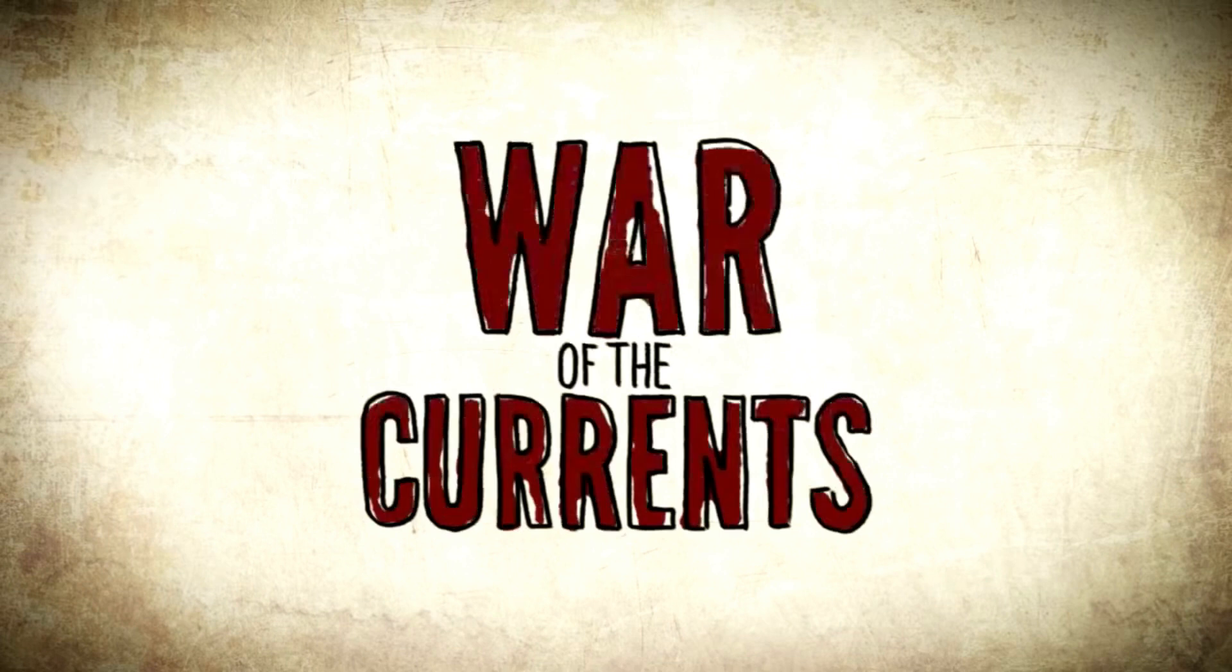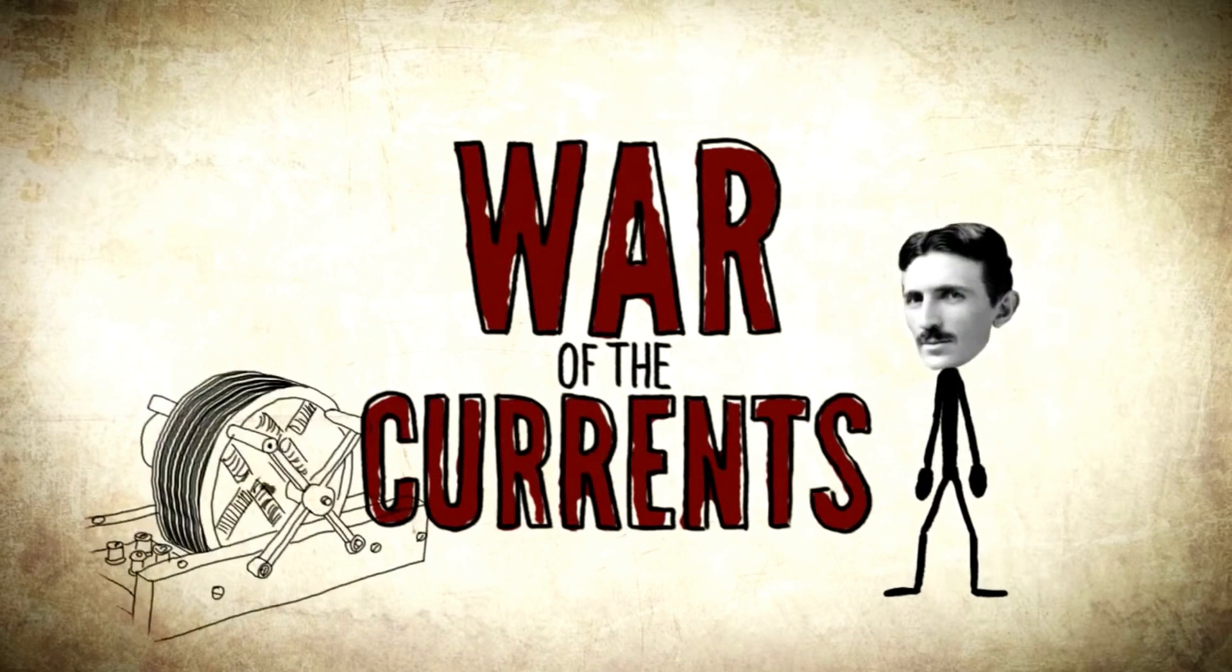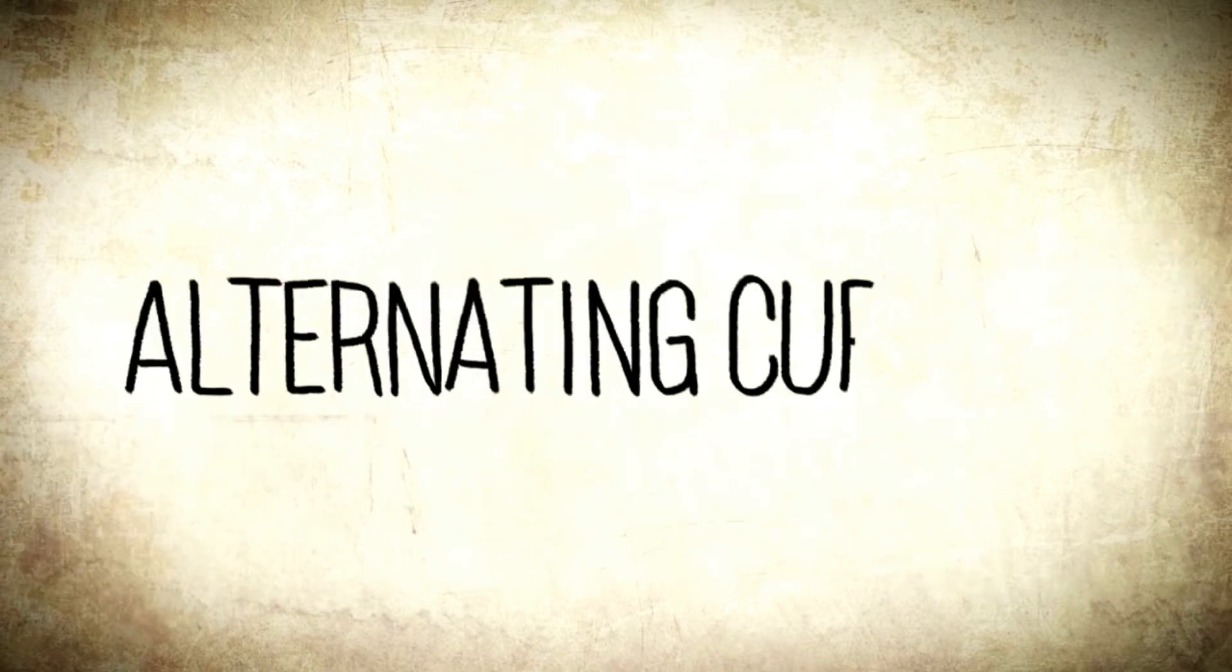This war of the currents, as it was called, brought in the involvement of Nikola Tesla, an inventor and rival of Edison, who had created the alternating current power generator. Alternating current eventually proved to be a better system of transmitting power.